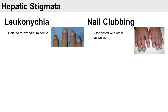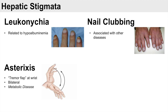Another interesting phenomenon seen in liver disease is asterixis. If you get the patient to put their arms straight in front of them with hands pointed upward — as shown in the diagram — and close their eyes, they will drop their hand and then immediately bring it back up. This is called a tremor flap, occurring at the wrist and bilaterally. Asterixis can occur in other metabolic diseases too, such as renal or respiratory issues. Its cause is not entirely known but seems to be due to an interruption of a postural pathway in the reticular formation.